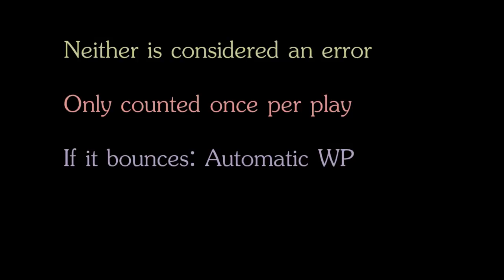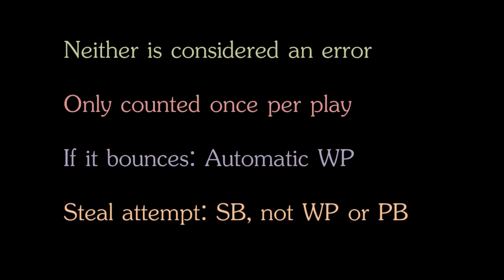Finally, if a runner is attempting to steal a base when there is either a wild pitch or a passed ball thrown, then in that case it would be considered a stolen base because the runner was going on the pitch. So if you are keeping score, you always have to keep an eye on the runner to see if he is going or not.